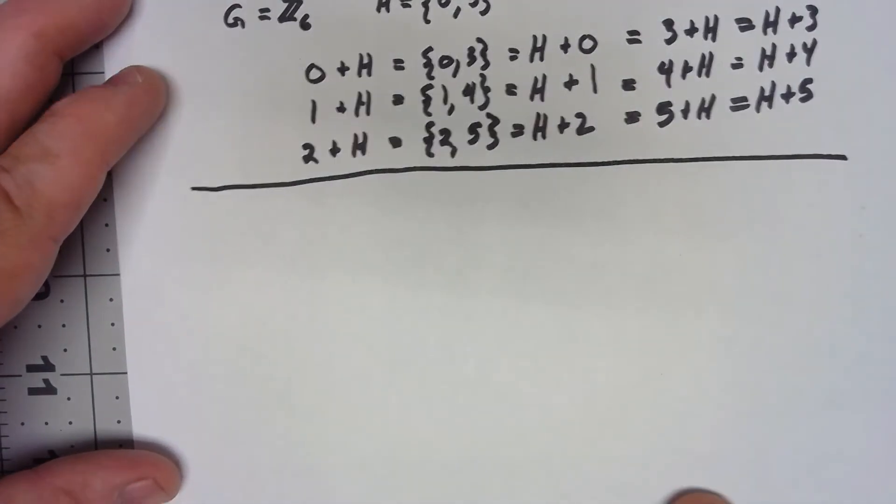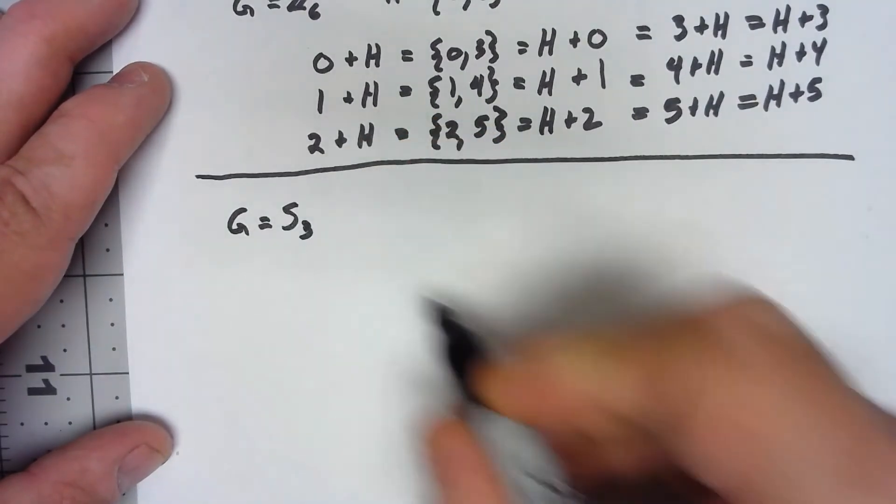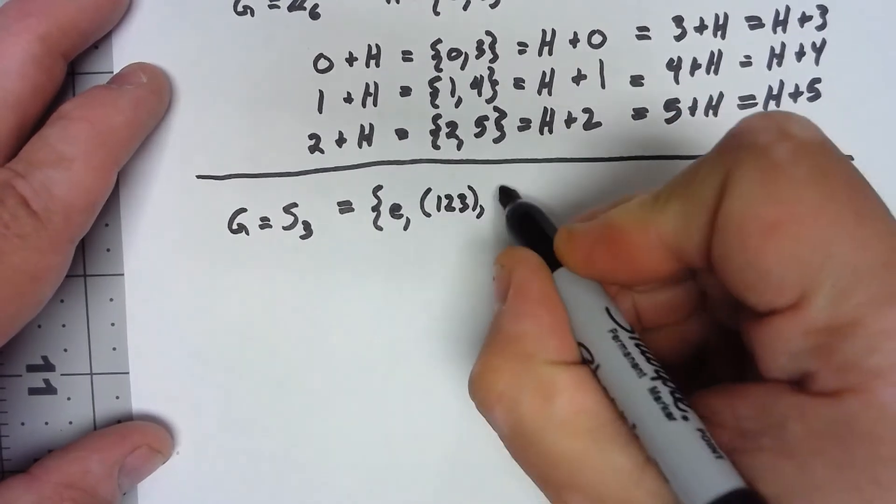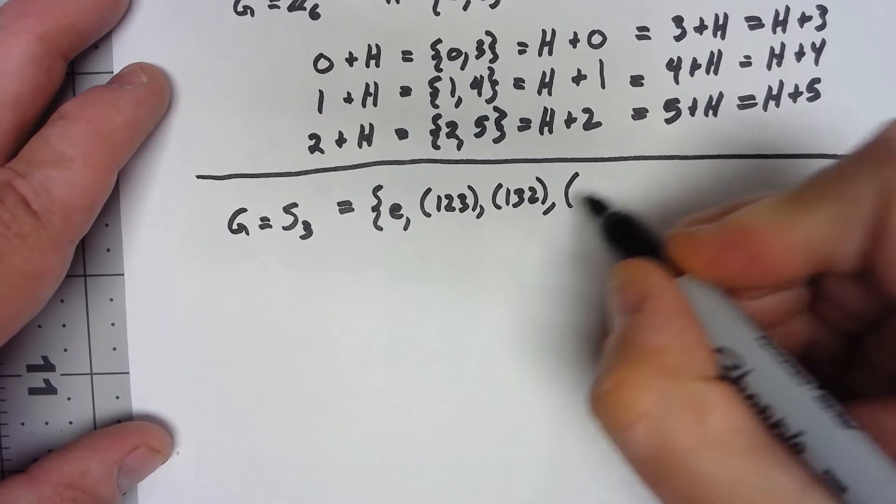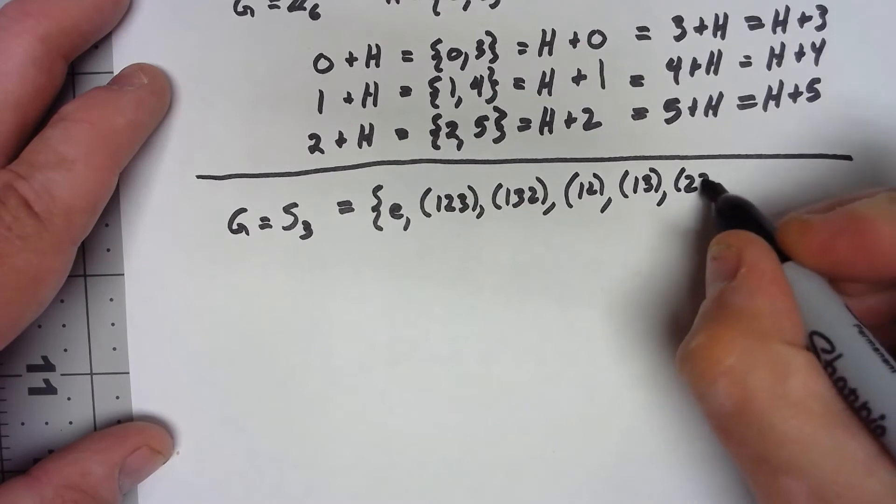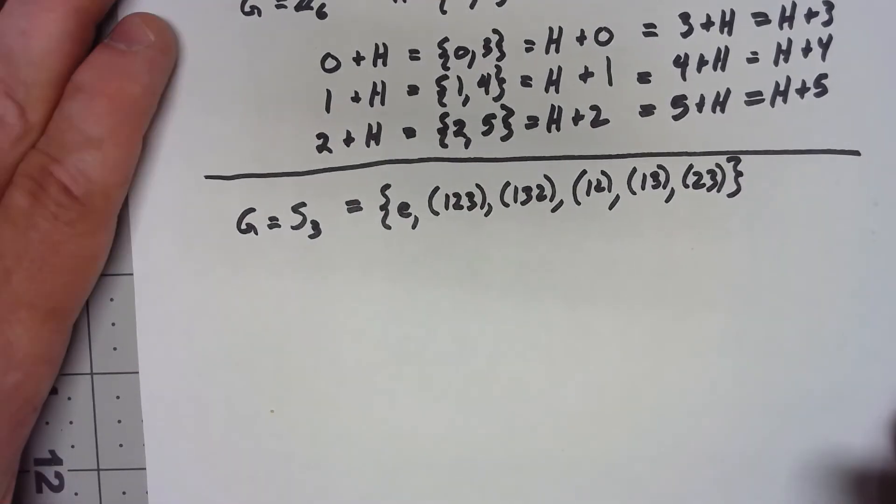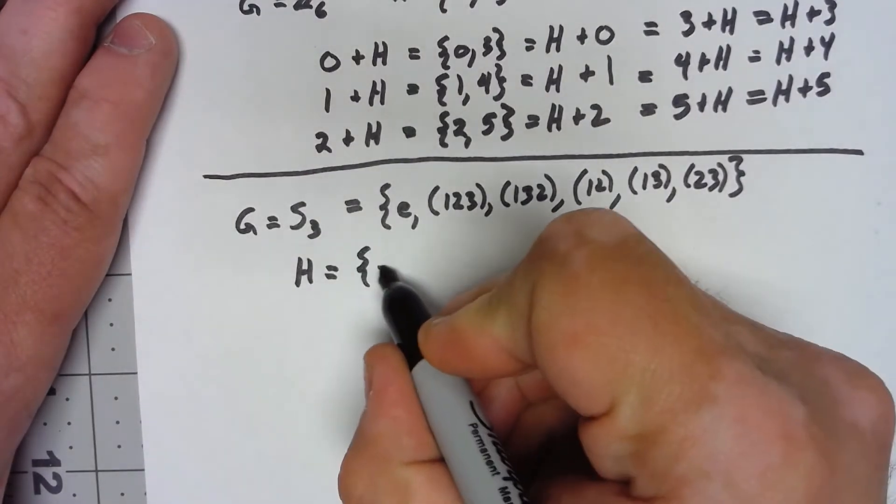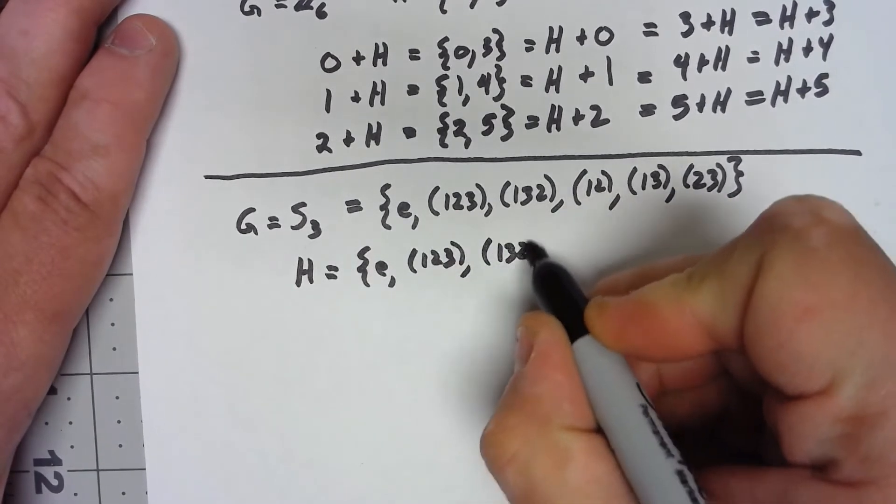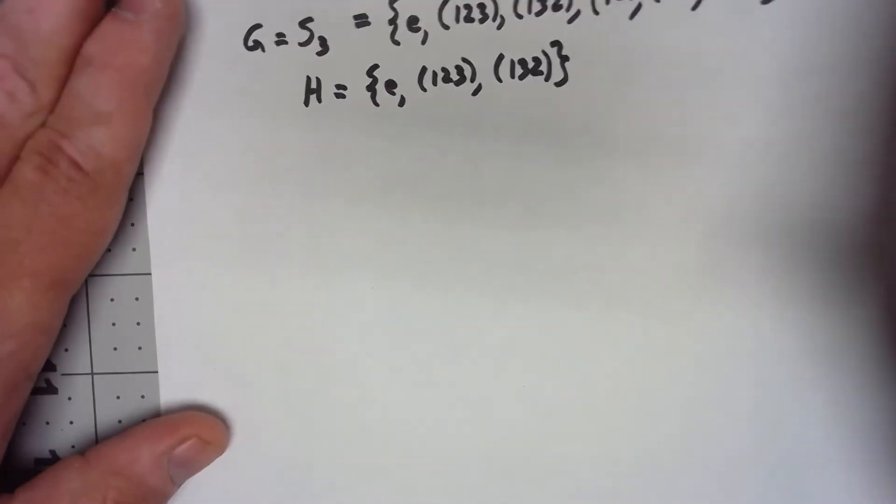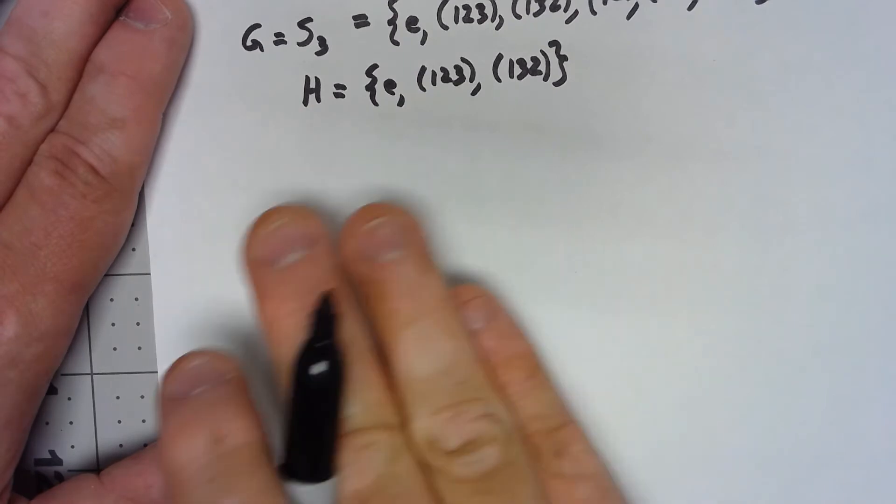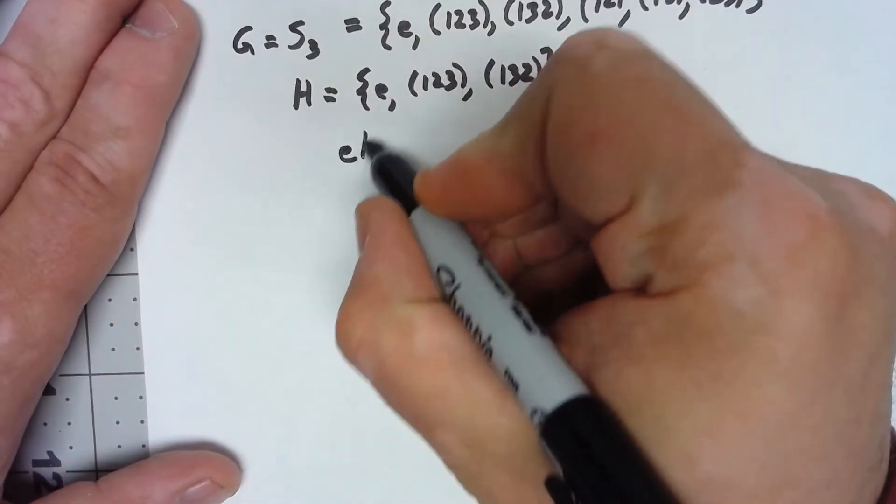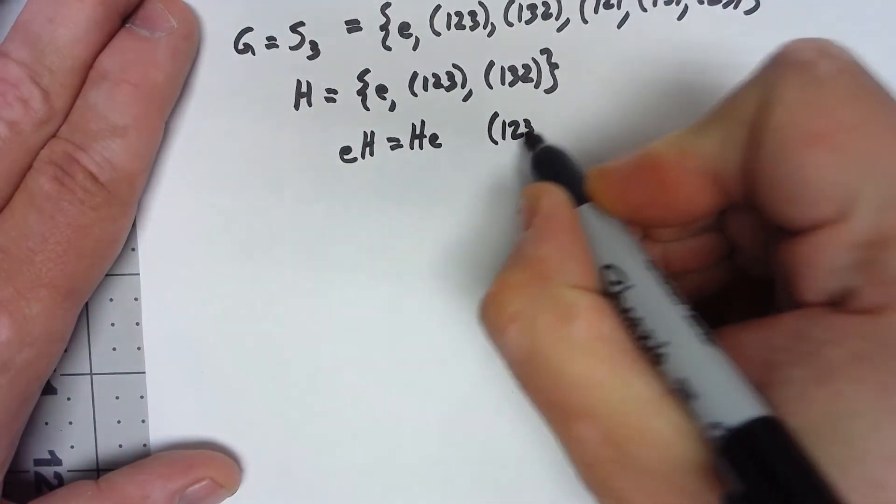Let's say my group is S3. If we remember, that means we've got the identity, we've got (1,2,3) and (1,3,2), and we've got some transpositions (1,2), (1,3), and (2,3). Let's call H equal to the subgroup that has the identity, (1,2,3) and (1,3,2).